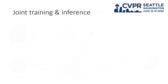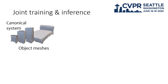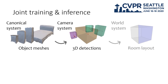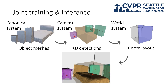So here we design an edge classifier to remove redundant faces to make its shape topology identical to the ground truth. During inference, we transform the object meshes from the canonical system into the bounding boxes in the camera system, and further transform them into the room layout in the wall system. That enables joint training and end-to-end production of the 3D scene.